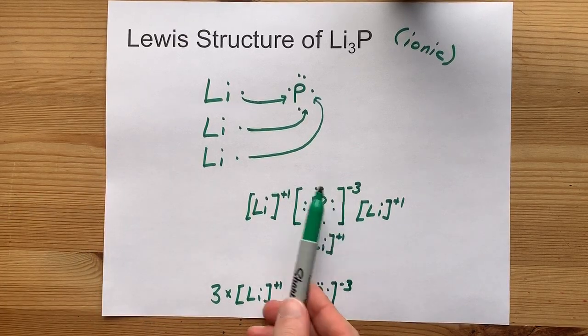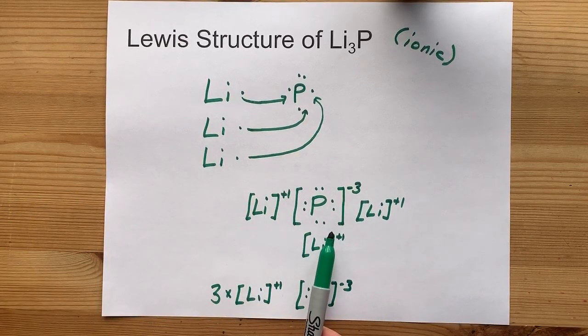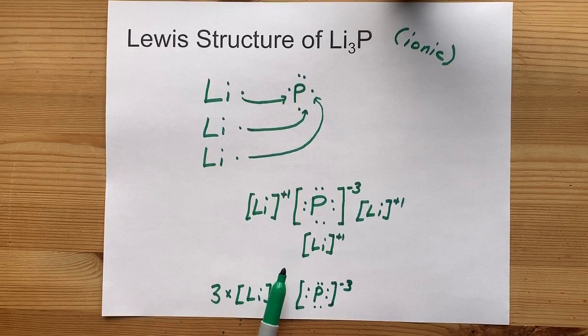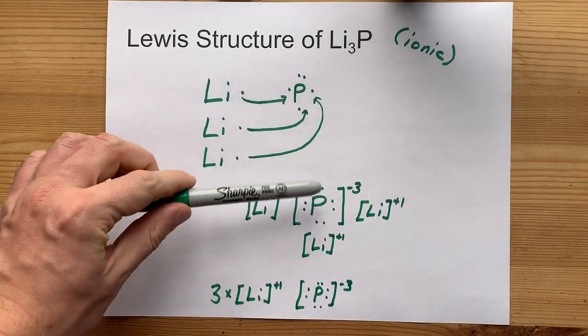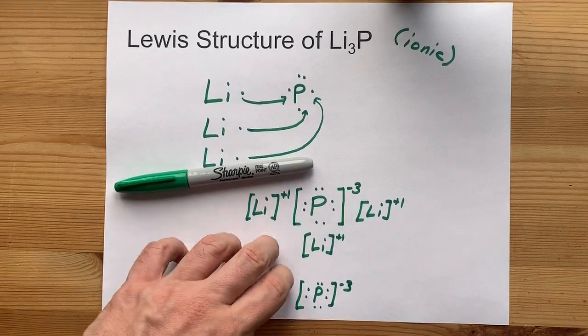There you go. This is my preferred Lewis structure for lithium phosphide. You might get away with this. Find out and do what you need to do. It's what you're always supposed to do in life, am I right? Best of luck.